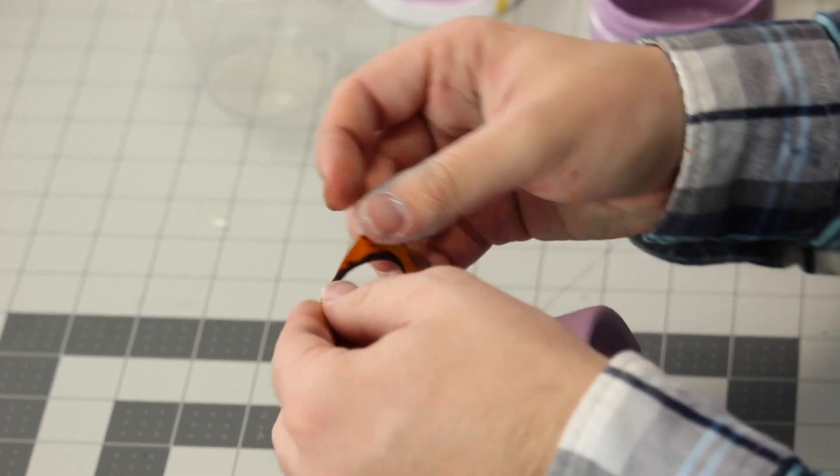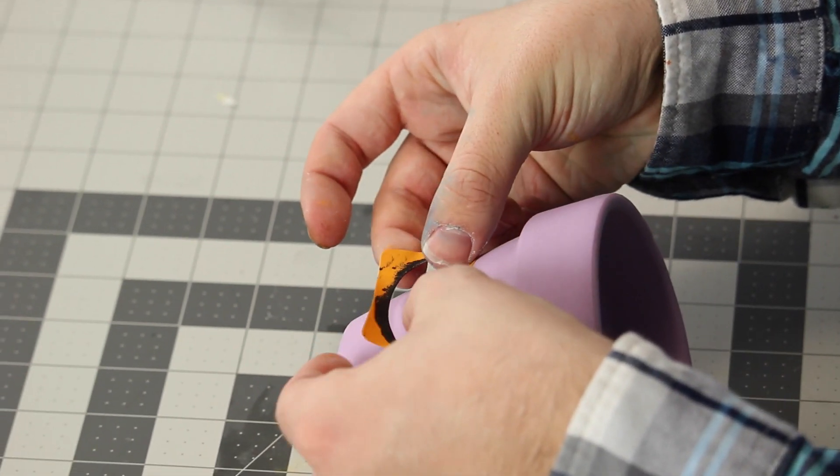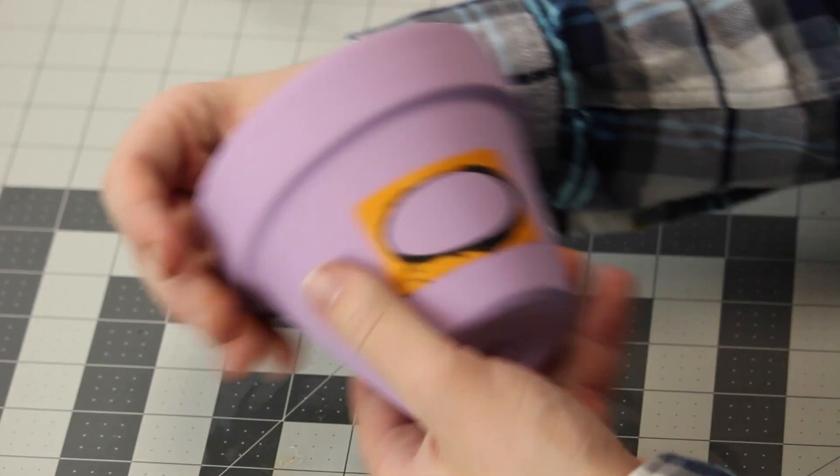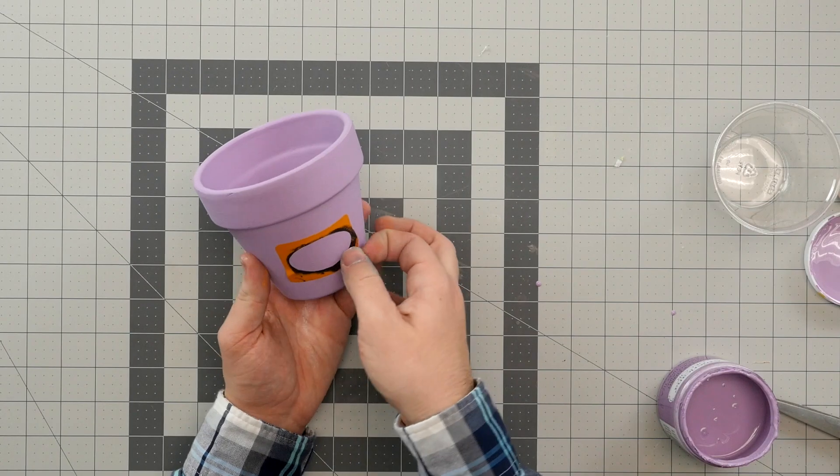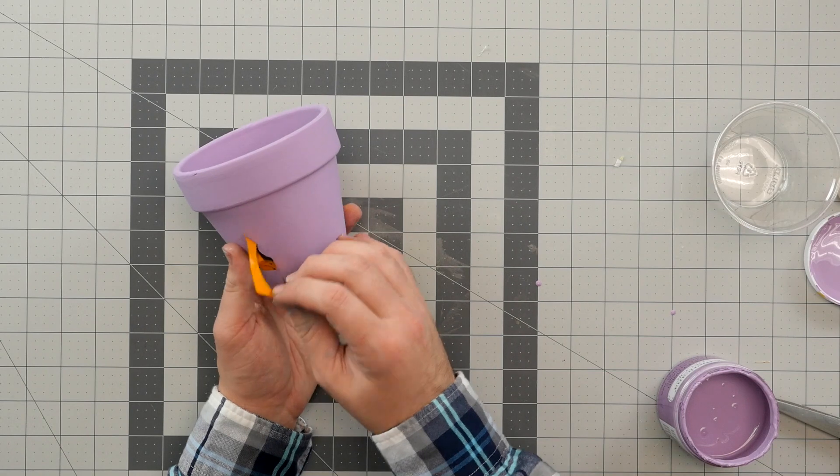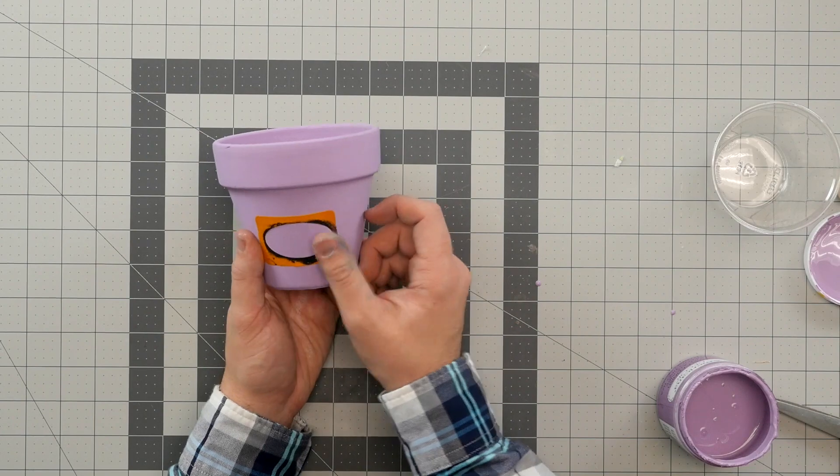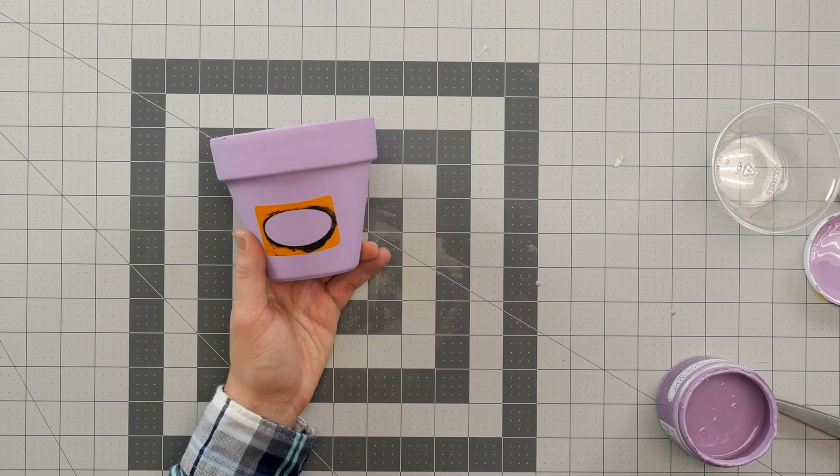So we're now going to apply it onto our terracotta pot just like so and we're gonna put chalkboard paint here. You want to make sure that you line it up straight and it's a little bit harder on terracotta because it's a circle and it wraps around. So you just want to realign it, it sticks perfect.